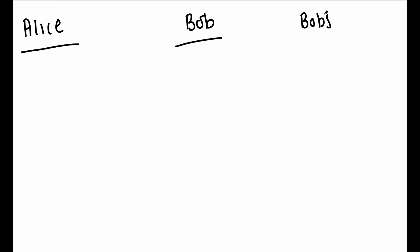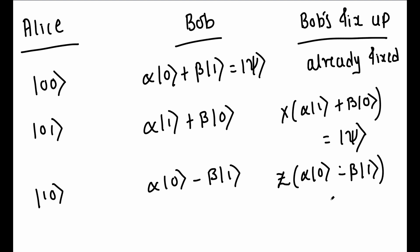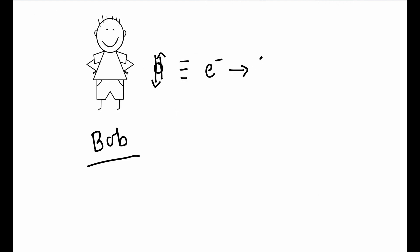For example, if Alice's measurement yields ket 00, then Bob doesn't need to do anything. Bob's state is already in ket psi. If her outcome is ket 01, Bob can fix up his state by applying X gate. If the outcome is ket 10, Bob can fix up by applying the Z gate. And if the outcome is ket 11, Bob can fix up by first applying the X gate and then applying the Z gate. So finally, Bob has the state ket psi prepared by Alice. They have successfully teleported the quantum state psi.